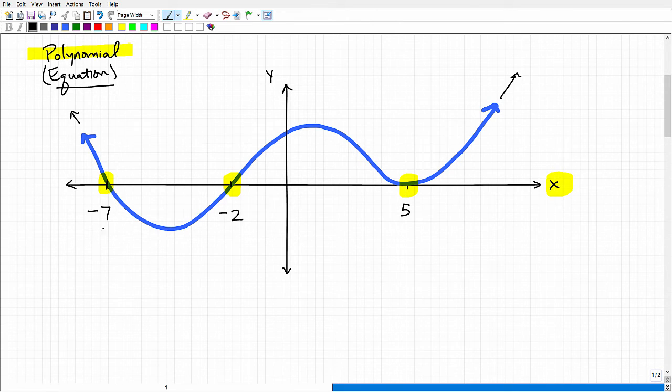Okay? So, for example, negative 7 is a solution to this polynomial. So is negative 2. These are real root solutions. And then 5, because it's bouncing off the x-axis, this is a double root. Double root. In other words, this root is occurring twice.